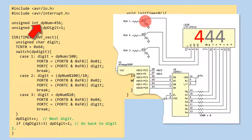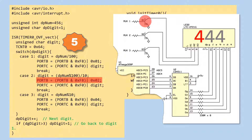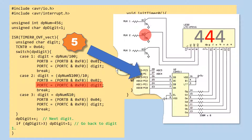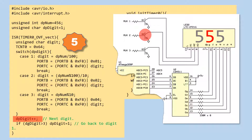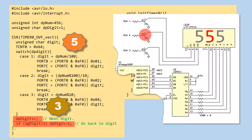dpNum is still 456. This instruction extracts 5 from dpNum. This instruction drives the second MUX transistor. This instruction sends the data 5 to the decoder. 5 is displayed on the second digit of the 3-digit display. dpDigit is incremented to 3, to indicate that the next digit to be displayed is the third digit. If dpDigit exceeds 3, it will be reset to 1.